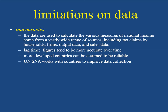First of all, any time you collect a bunch of data there are going to be inaccuracies. The data used to calculate the various measures of national income comes from an enormously wide range of sources including tax claims by households, firms, output data, and sales data. There's also going to be a lag time — figures tend to be more accurate over time, and responsible governments go back and adjust them.